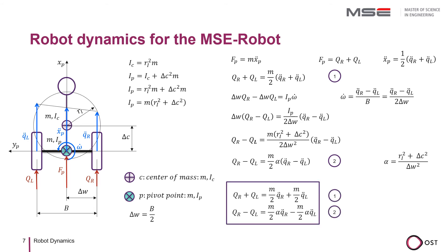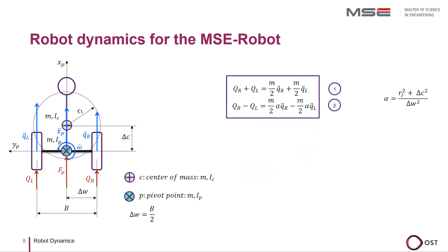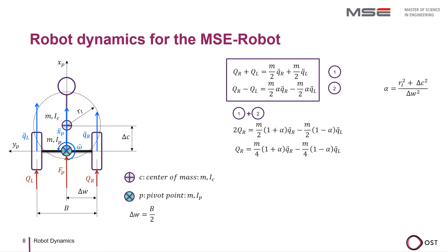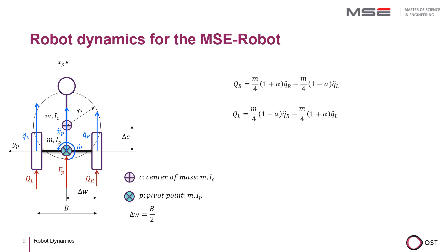We now have two equations with which we can derive the mass matrix. We now add the two equations which gives us QR and eliminates QL. We calculate the difference of the two equations which gives us QL and eliminates QR.